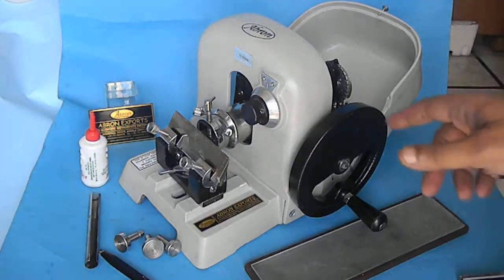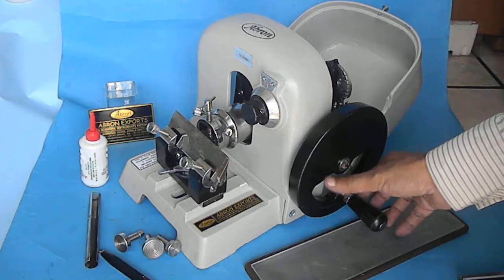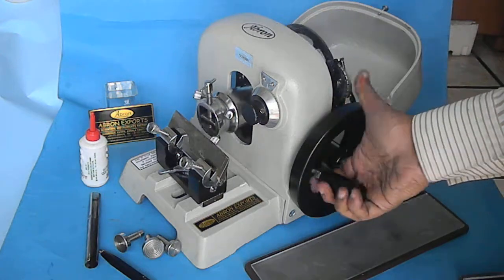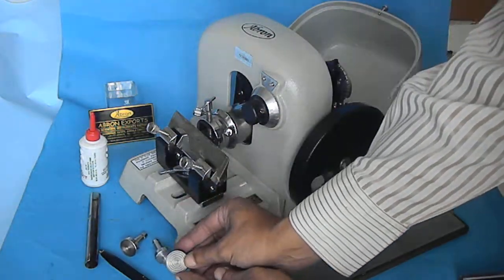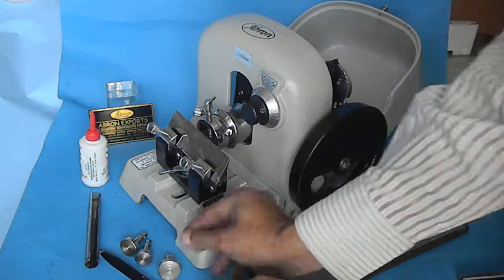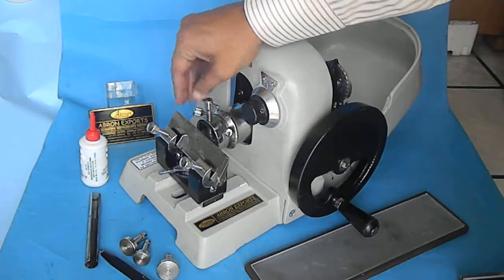This is the apron, this microtome which is a rotary microtome. You can put the block, make a block with the wax and put it in this block.